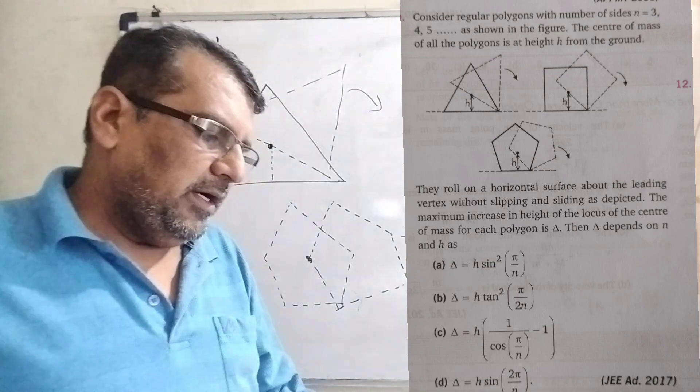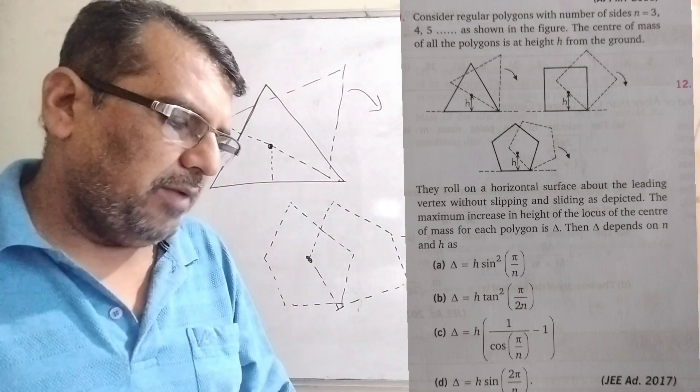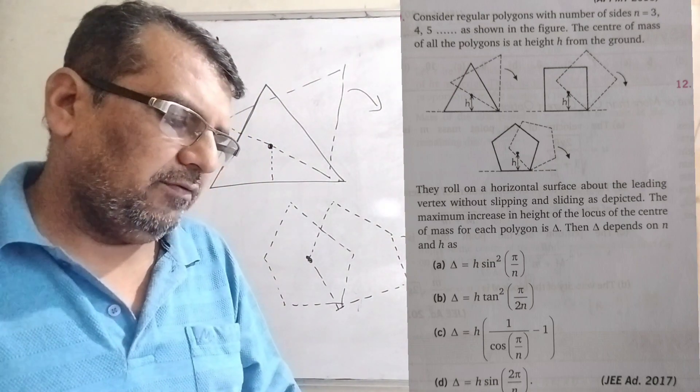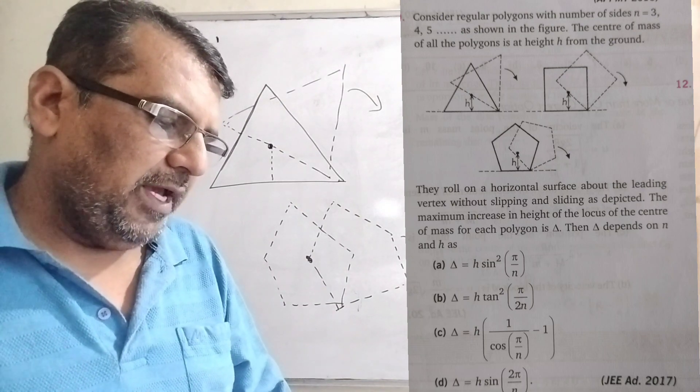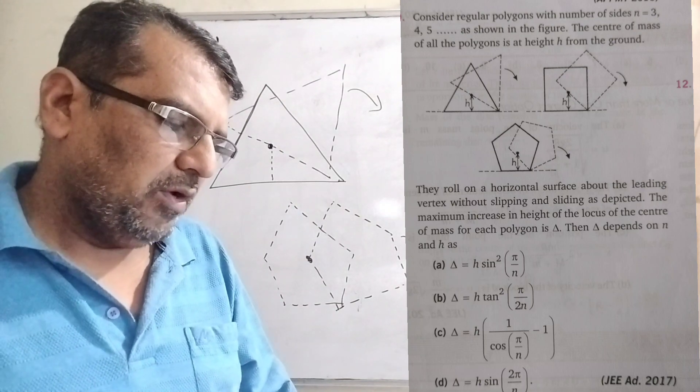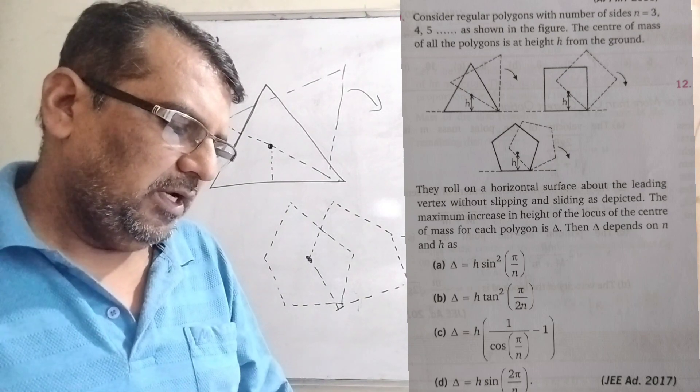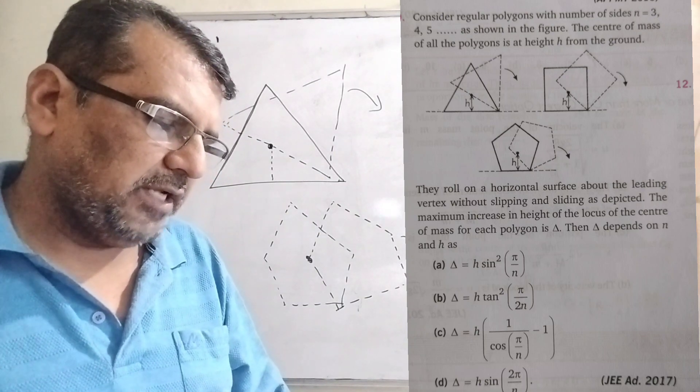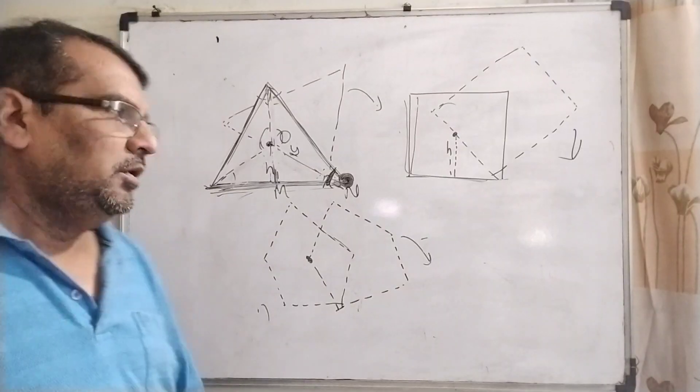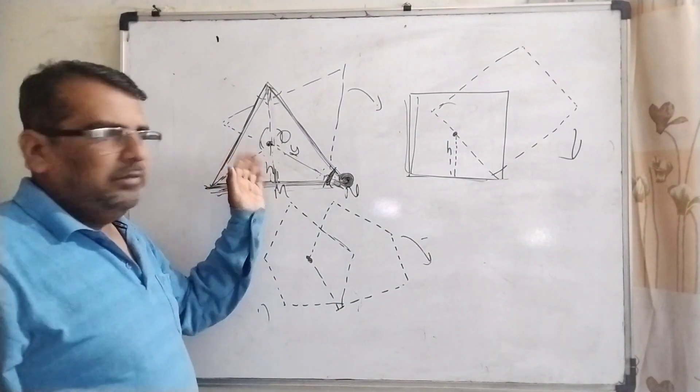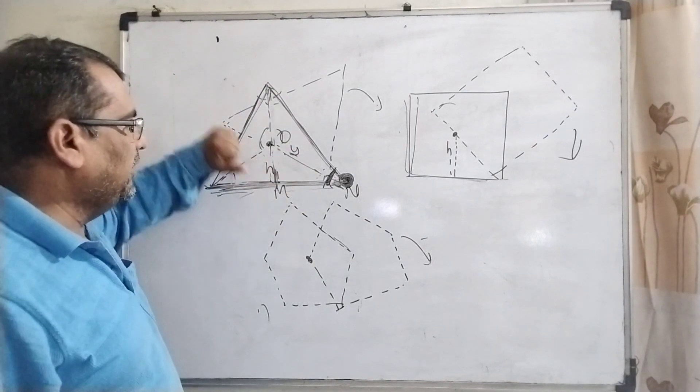Δ = h sin²(π/n), option B: Δ = h tan²(π/2n), option C: Δ = h[1/cos(π/n) - 1], and last option D is Δ = h sin(2π/n).